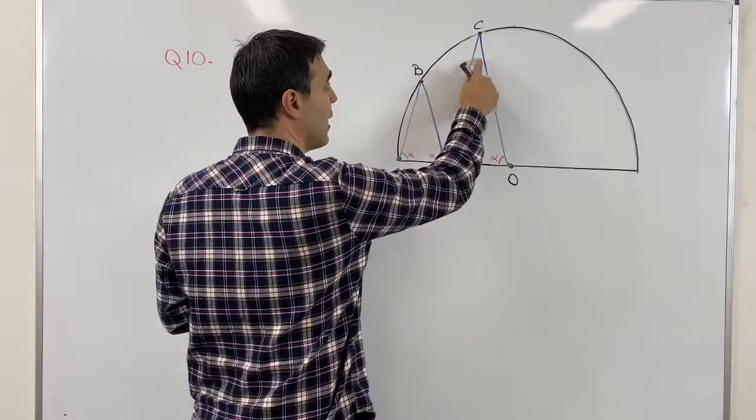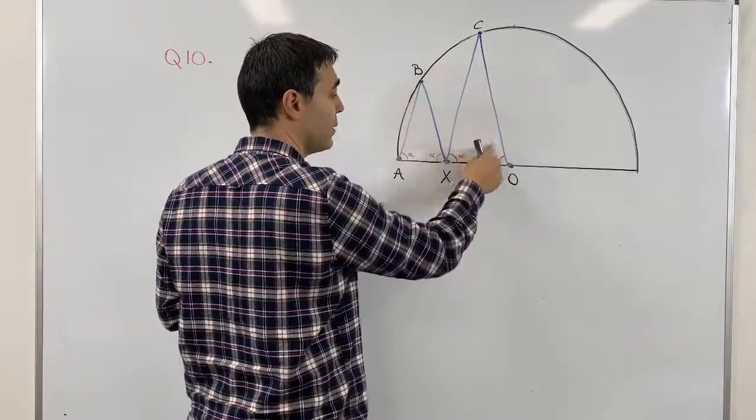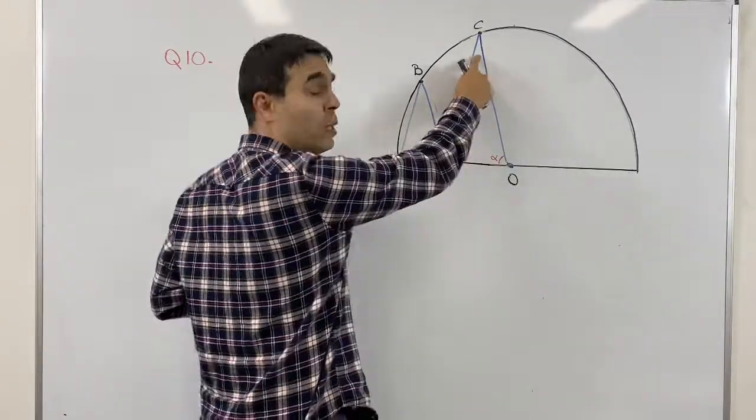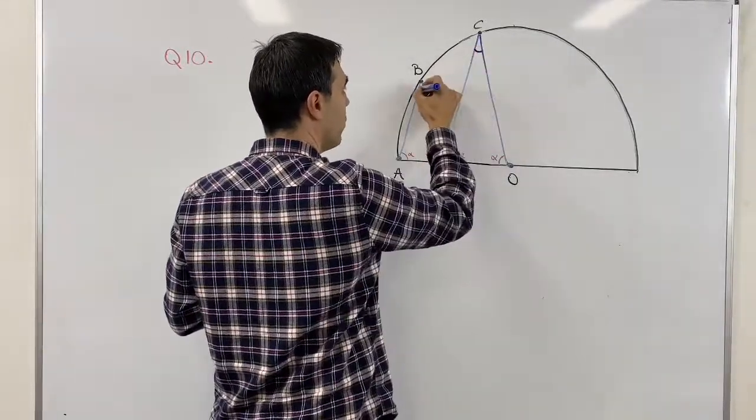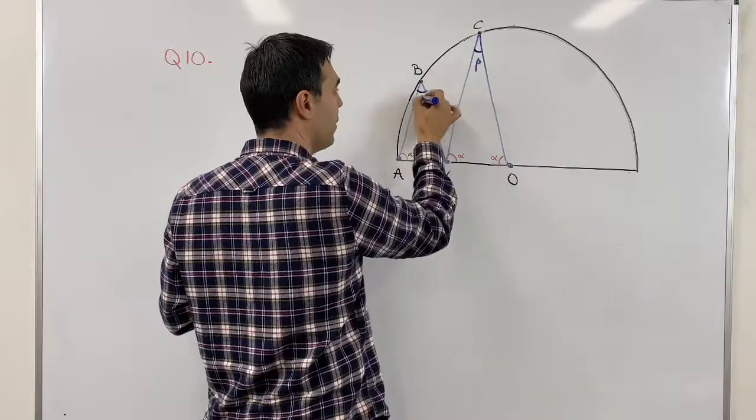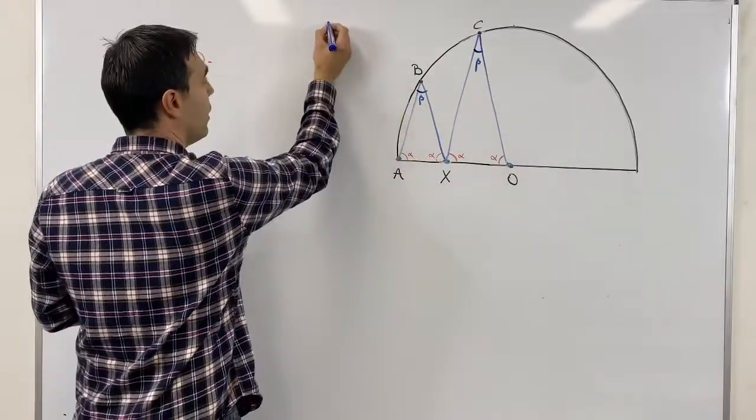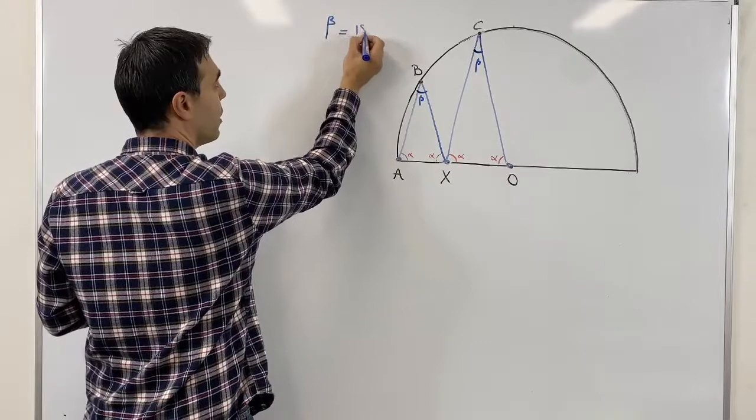And this angle is actually not unknown. We know this based on alpha, so this should be 180 minus 2 alpha. Instead of that I'll write it as beta not to take too much space, and I know it is 180 minus 2 alpha.